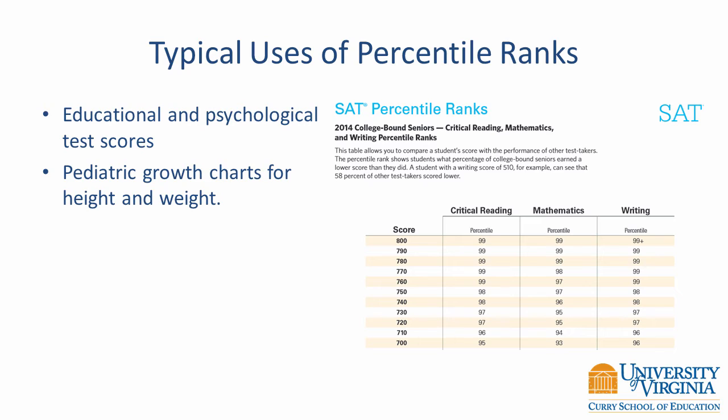Pediatric growth charts are a prime example of the way percentile ranks are used in medicine. Whenever a child visits the doctor, her weight is compared to a chart, and the doctor will determine if her weight is normal, above normal, or below normal. A normal weight would have a percentile rank of about 50.